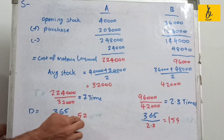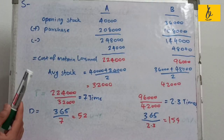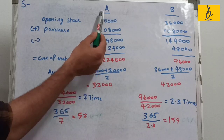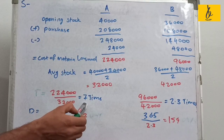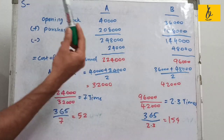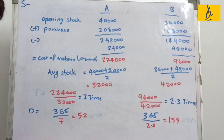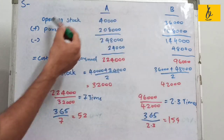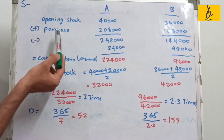In conclusion, Material A has an inventory turnover ratio of 7 times and 52 days, while Material B is very low at 2.3 times and 159 days. Material A is more efficient. This is the opening stock plus purchase minus closing stock formula in action.